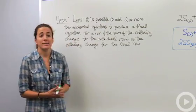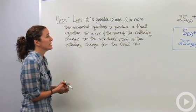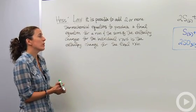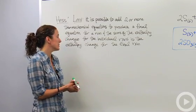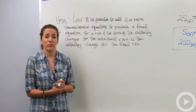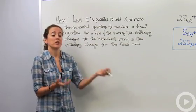Okay, there's this law called Hess's law. Hess's law states that it is possible to add two or more thermochemical equations to produce a final equation for a reaction, and the sum of the enthalpy changes for the individual reactions is the enthalpy change for the final reaction. Now this is definitely a mouthful. It's much easier to explain if you actually do it.